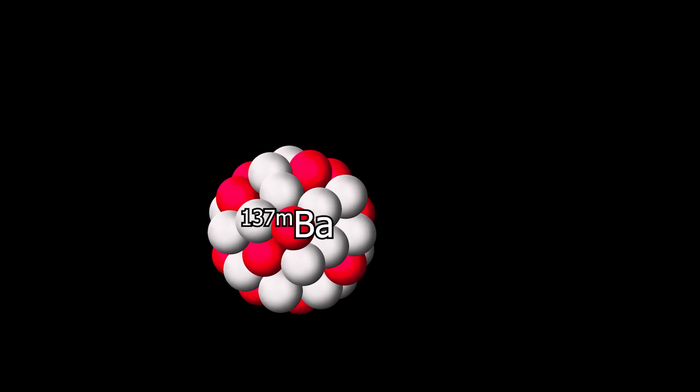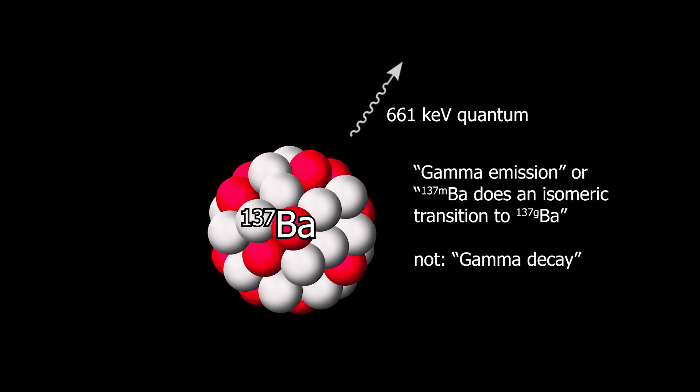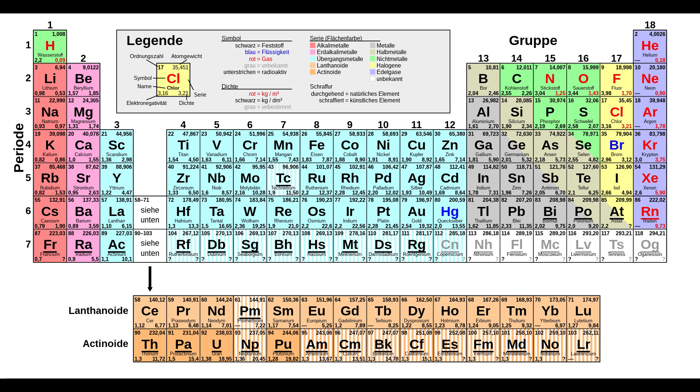It transitions to the ground state via the emission of the characteristic 661 keV gamma line. No other particles are emitted, just one gamma quantum. This is why I prefer to talk about gamma emission or an isomeric transition rather than calling it a gamma decay, as many do.